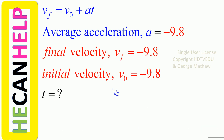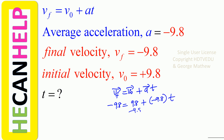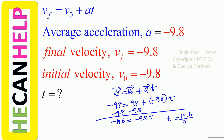Alternatively, we can use the formula: final velocity equals initial velocity plus acceleration times time. Final velocity is negative 9.8, initial velocity is positive 9.8, acceleration due to gravity is negative 9.8 times time. Subtract 9.8 from both sides: negative 19.6 equals negative 9.8T. So T equals 19.6 divided by 9.8, which is two seconds. So the time of flight is two seconds.